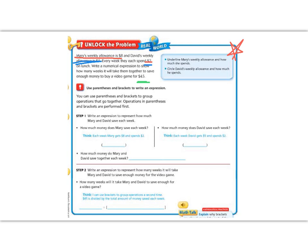Let's use our steps to get there. We're going to use parentheses, the round one, and brackets, the square ones, to solve this problem. You can use parentheses and brackets to group operations that go together. Operations in parentheses and brackets are performed first.